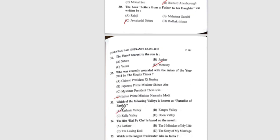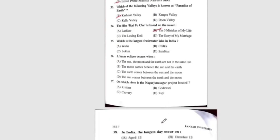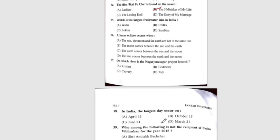Question 34: The film Kai Po Che is based on the novel — the correct answer is B, The Three Mistakes of My Life. Question 35: Which is the largest freshwater lake in India? The correct answer is Wular Lake.